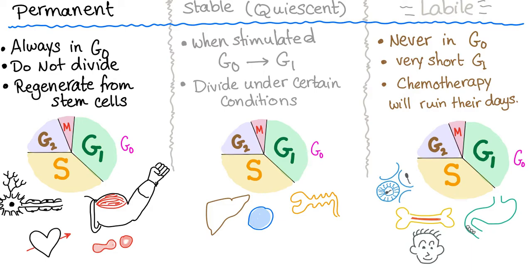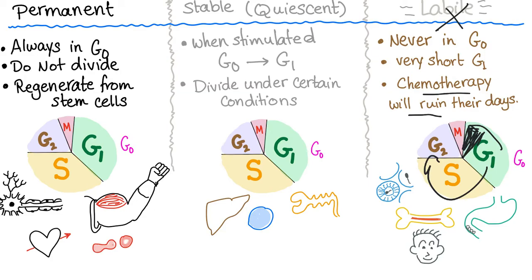Labile cells. Labile means they are not stable — like borderline disorder patients who have labile mood — so they are never resting, never in G0. They have a very short G1, because they are always dividing and don't have time to stay in G1 either. Chemotherapy will ruin their days, so labile cells are heavily affected. Chemotherapy does not cure cancer; it destroys any dividing cells. Since cancer cells divide very rapidly, they are most affected, and so are these labile cells.